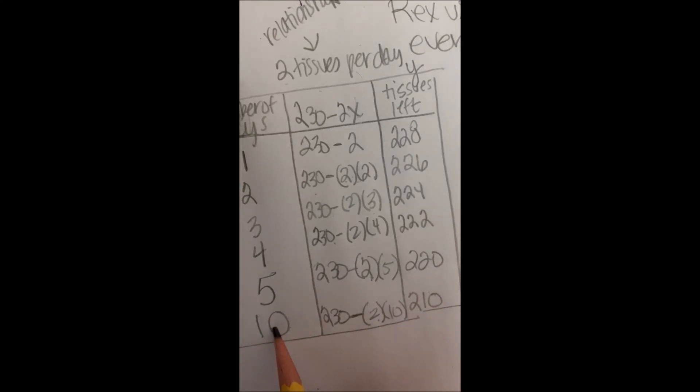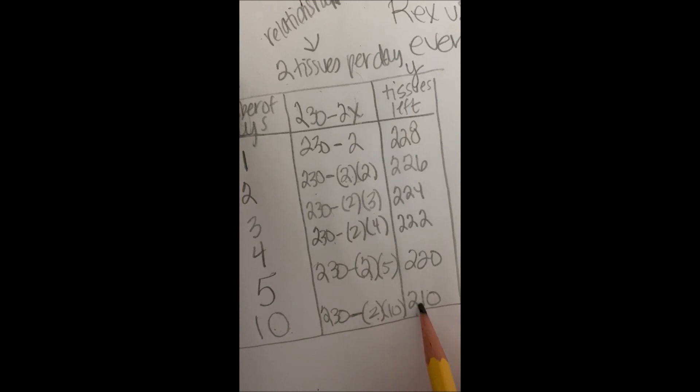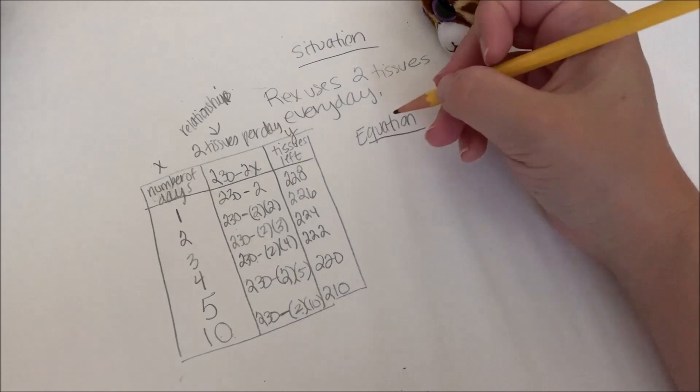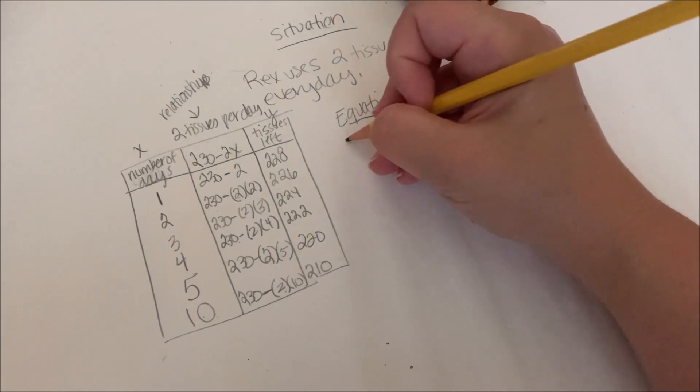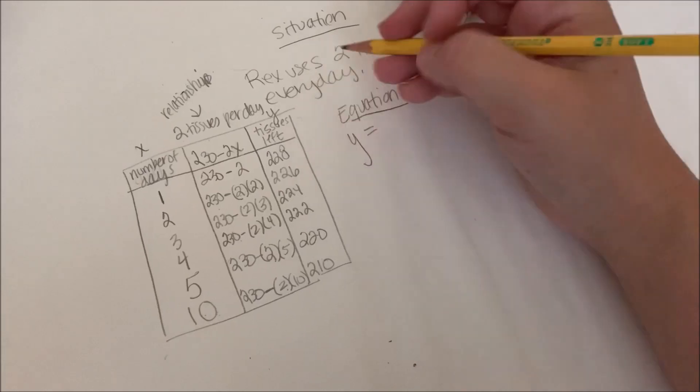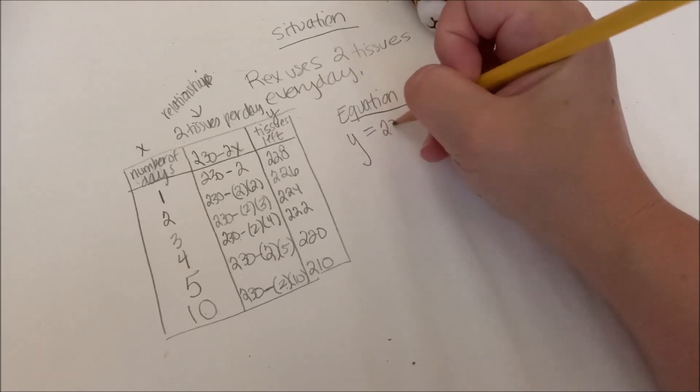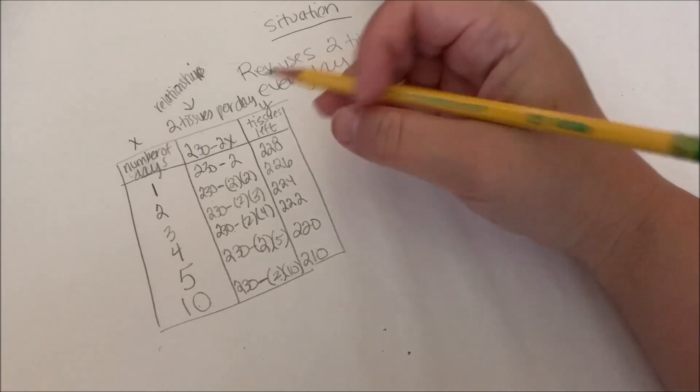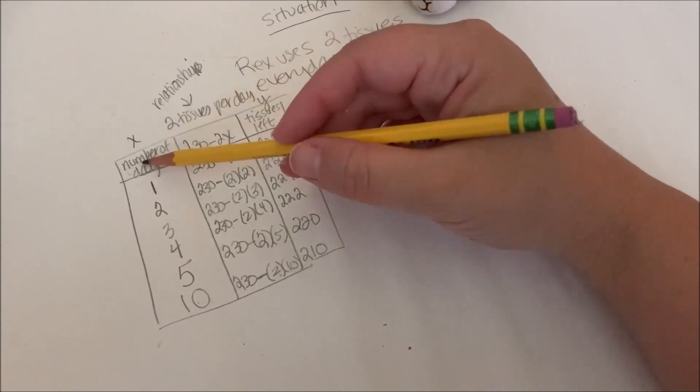So no matter how many days I want to figure out how many tissues will be left over, this equation will help me figure it out. So I'm going to write this as a nice clean equation. y, that's tissues left, equals 230 minus 2x. And x represents number of days.